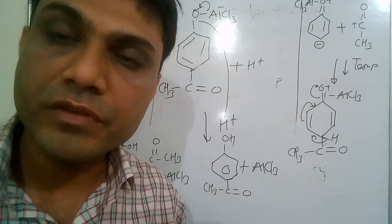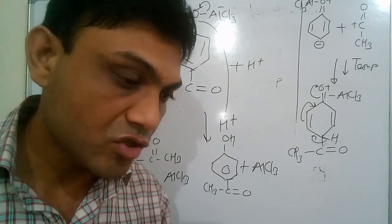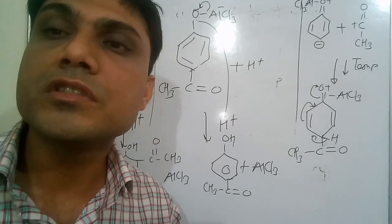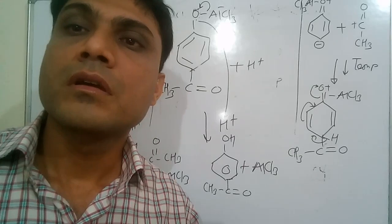So depending on the temperature, the respective isomer is formed. I hope you have understood this lecture on Fries rearrangement and the temperature dependency of the para and ortho isomers. Thanks for watching. Please subscribe to CV Raman Chemistry Classes. Thank you.